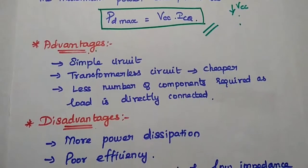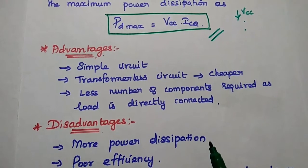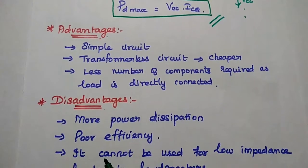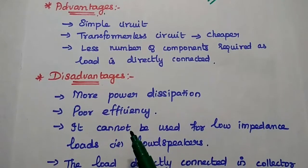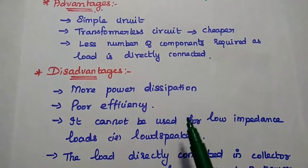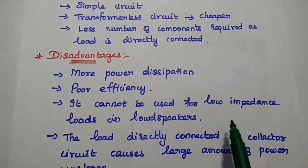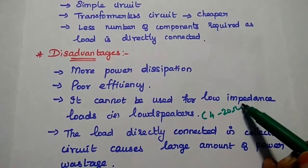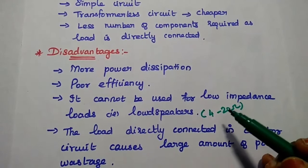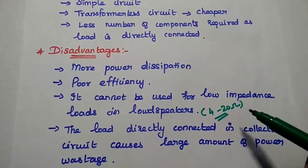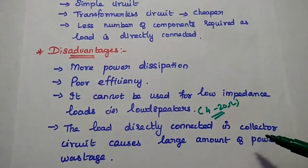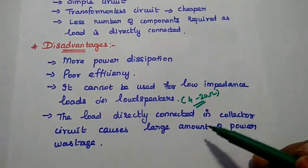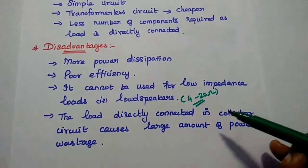The advantages of this directly coupled Class A amplifier are that it is a simple circuit, has no transformer so it is cheaper, and requires fewer components since the load is directly connected to the collector. The disadvantages are: very high power dissipation, poor efficiency, and it cannot be used for low impedance loads — especially loudspeakers, which have an impedance range of 4 to 20 ohms. The load connected directly in the collector circuit may also cause large power wastage. To overcome these disadvantages, we can use the transformer coupled Class A amplifier.